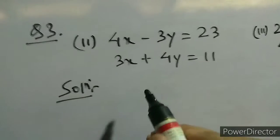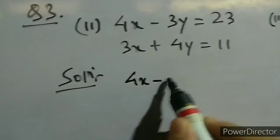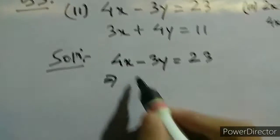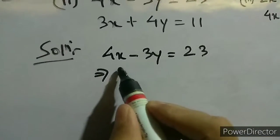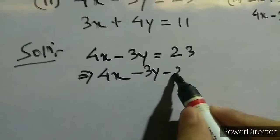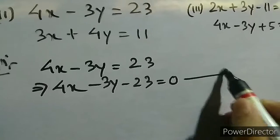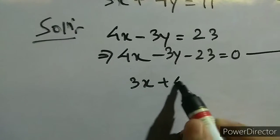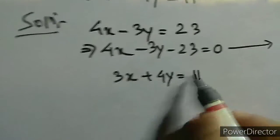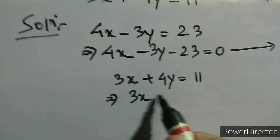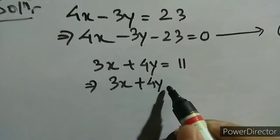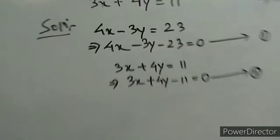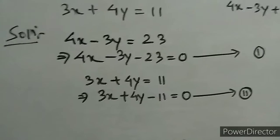Here the first equation is 4x minus 3y equal to 23. So 23 is on the right side, I have to bring it to the left side. So this becomes 4x minus 3y minus 23 equal to 0 — this is equation 1. The second equation is 3x plus 4y equal to 11. Bringing 11 to the left side: 3x plus 4y minus 11 equal to 0 — this is equation 2.